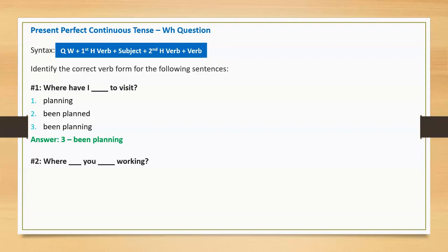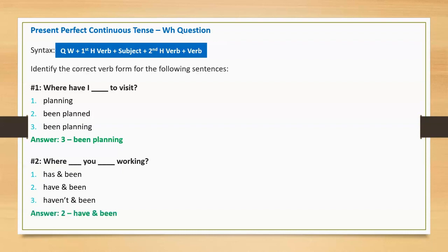Sentence two: 'Where blank you blank working?' Option one: has and been. Option two: have and been. Option three: haven't and been. Correct answer: option two, have and been. Full sentence: 'Where have you been working?'